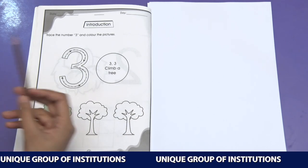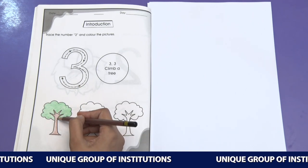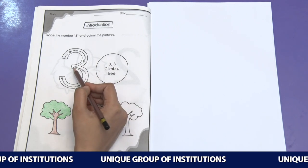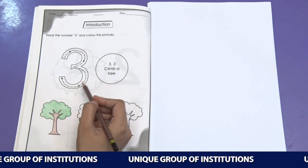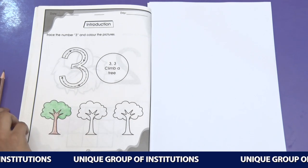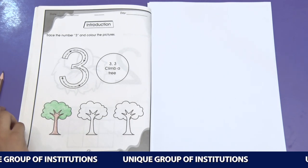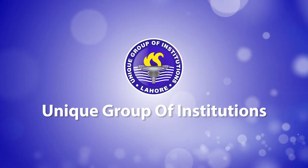Now you have learned how to trace number 3 and how to color the picture. First of all, we have to make one curve and then another curve under it. It will form number 3. Well done, students. Now let's practice this at home. Very good. Well done, students.